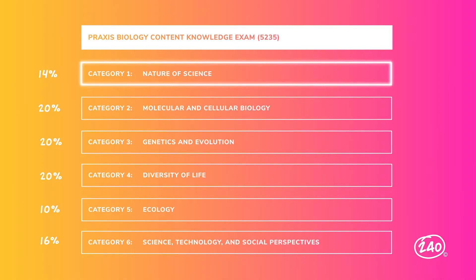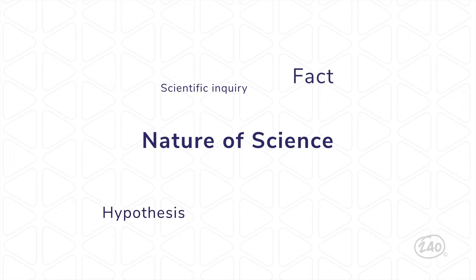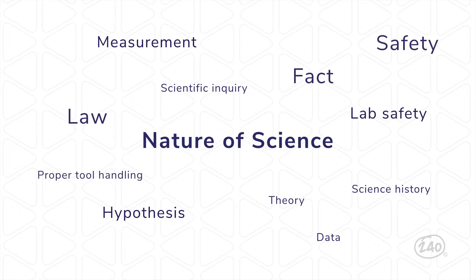Let's start with Category 1, the nature of science. This section covers general best practices for science, no matter what branch you're studying. You'll need to understand the process of scientific inquiry, the difference between facts, hypotheses, theories, and laws, some science history and when major discoveries were made, and systems of measurement and how to represent data.